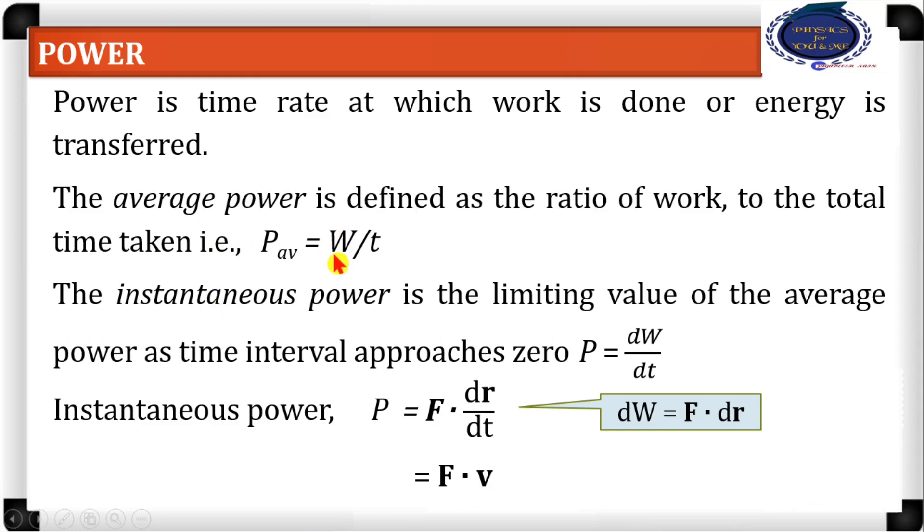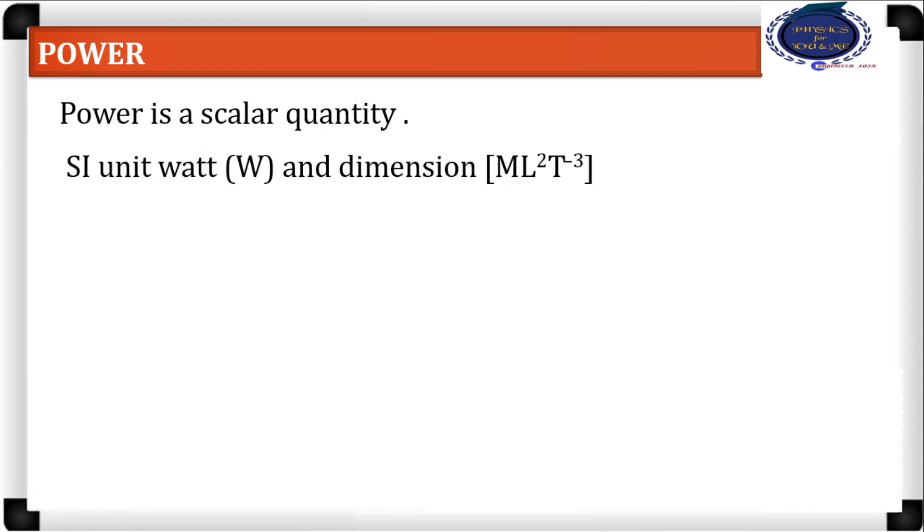Power is a scalar quantity. What is the SI unit for measuring power? It is watt, or joule per second. That is the SI unit for measuring power. And what is the dimension? It is 1 in mass, 2 in length, and minus 3 in time.